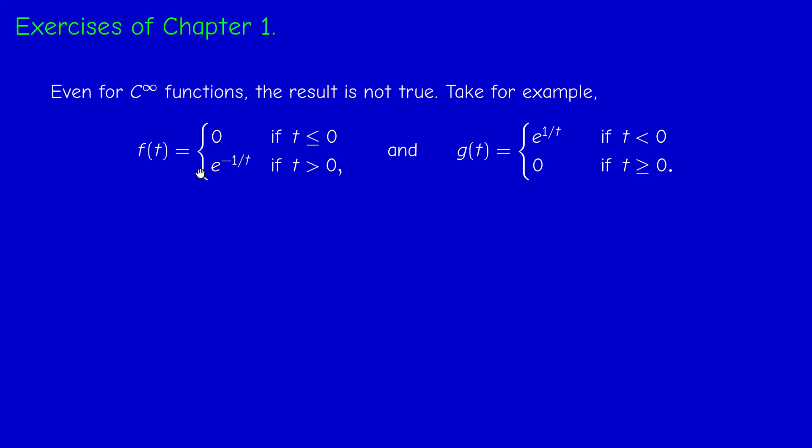But if you differentiate, you'll get, for example, 1 over t squared times e to the minus 1 over t, and this also tends to zero at zero because the exponential always wins. And G is simply the symmetric of F with respect to the y-axis. So the graph of F looks like this. It's zero, and then it slowly increases. The tangent is zero, of course, at zero, as we observed.